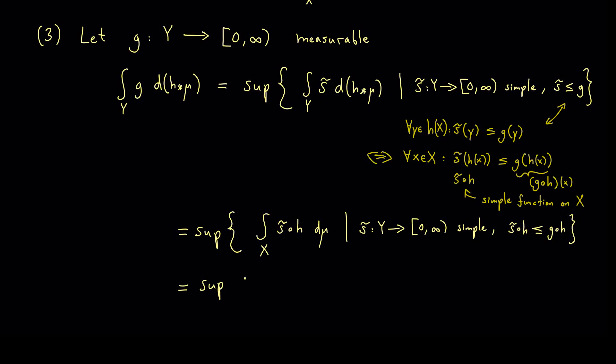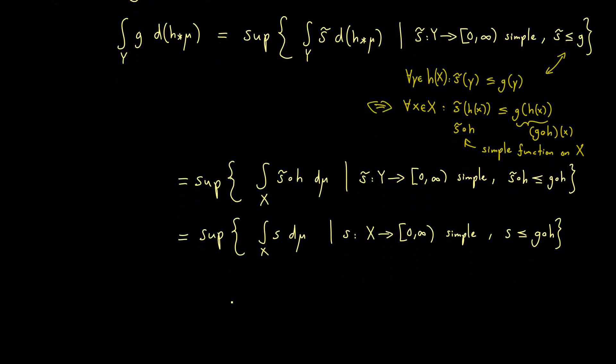And now we can rewrite this because we know this is just a simple function on X. Hence we could call this new simple function just s. You see this looks shorter and is easier because now we look at simple functions on the set X. However, please note that we now look at all the simple functions on X. Not just the ones that look like this composition here. However, we don't change the supremum by adding the simple functions that are not given by this composition here.